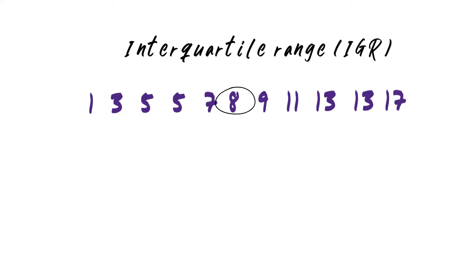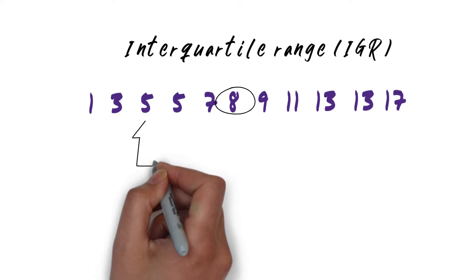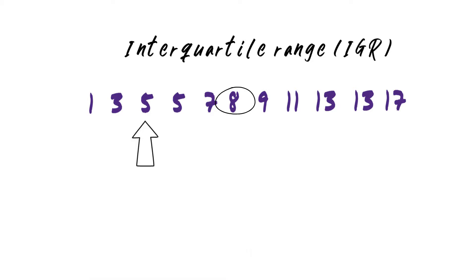In the lower half, once again look for the middle point. If the data set is even, you have to add the two middle numbers up and divide by 2. But we have an uneven number of data points, so our middle point is number 5, which is quartile 1.